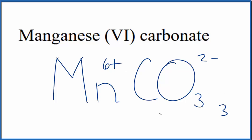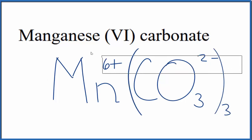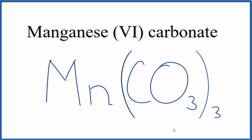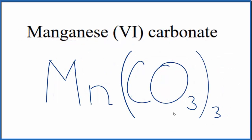We need to put parentheses around the carbonate ion since we have three of them, then remove the charge symbols. This is the formula for manganese(VI) carbonate: Mn(CO₃)₃.